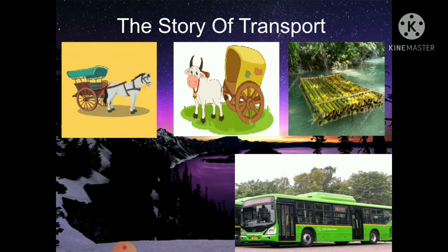Gradually, many vehicles such as scooters, cars, buses, trains, etc. came into operation. These new vehicles use fuels like petrol, diesel and compressed natural gas (CNG).